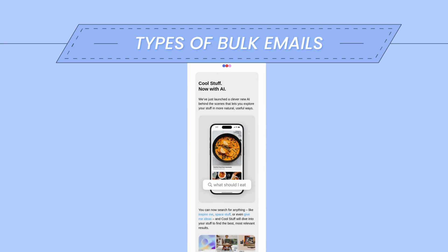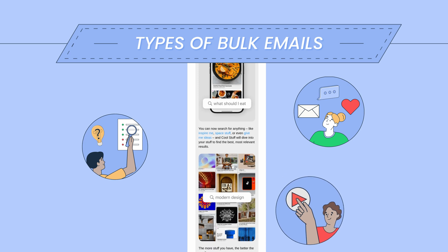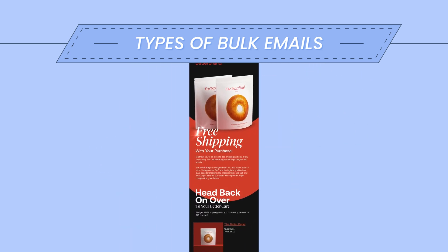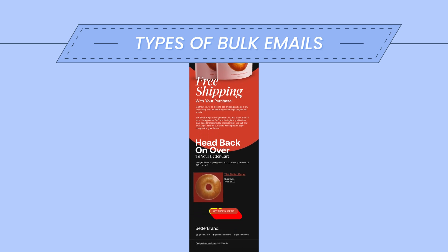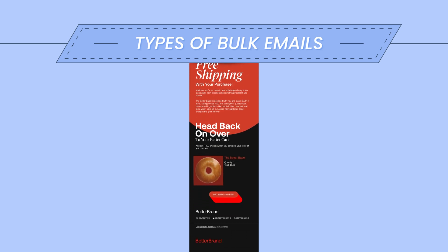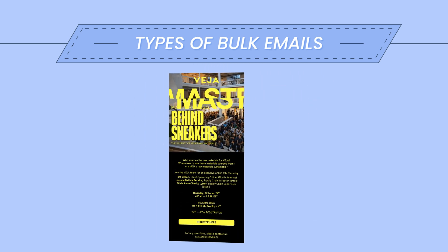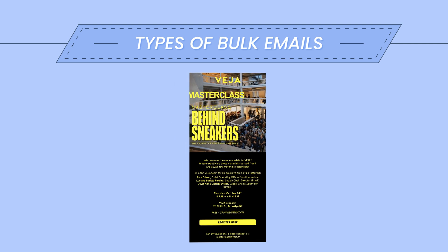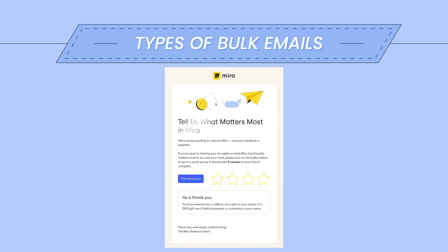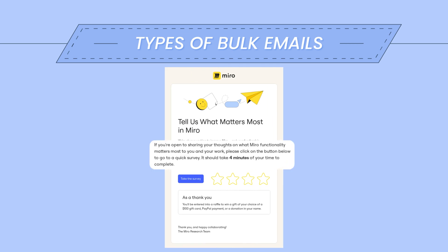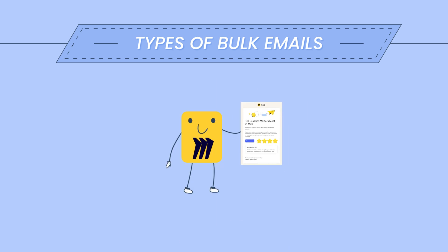Product or feature announcements target existing users to keep them engaged, spark curiosity, and encourage the use of the new feature. Re-engagement emails target inactive subscribers and offer incentives to regain their interest. Event invitations and reminders are typically used by businesses for webinars, product launches, or special event announcements. Feedback or survey emails aim to collect feedback on a product, service, or customer experience. These are usually vital sources of information for improving the product or service.